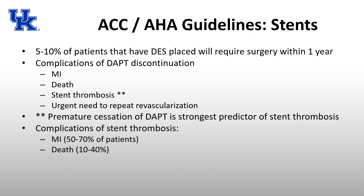The American College of Cardiology and American Heart Association guidelines on stents: five to ten percent of patients who have a drug-eluting stent placed will require surgery within one year. The current recommendation is for patients with a drug-eluting stent to be on one year of dual antiplatelet therapy — typically aspirin and clopidogrel, a P2Y12 inhibitor. This is why it's important that five to ten percent of these patients may require surgery during that year.